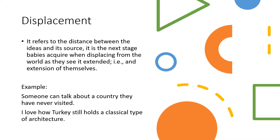The first expanded language function that we have is displacement. Displacement refers to the distance between the ideas and its source. It is the next stage babies acquire when displacing from the world as they see it extended, that is an extension of themselves.